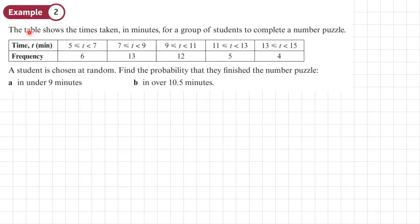Example two: The table shows the times taken in minutes for a group of students to complete a number puzzle. A student is chosen at random. Find the probability that they finish the number puzzle: part a) under nine minutes, part b) over 10.5 minutes. So we need to know what the total frequency is: 6 plus 13 plus 12 plus 5 plus 4, which gives us the denominators for our fractions, and that is 40.